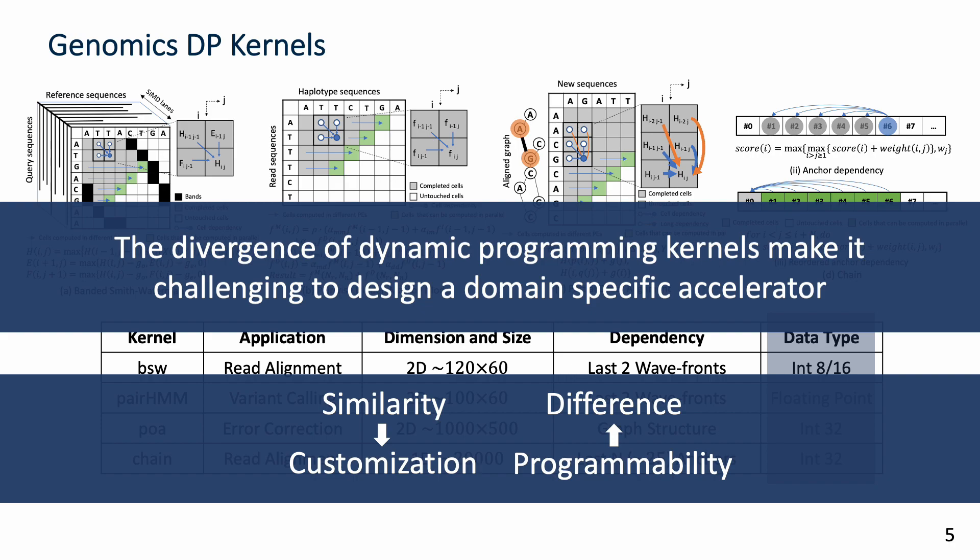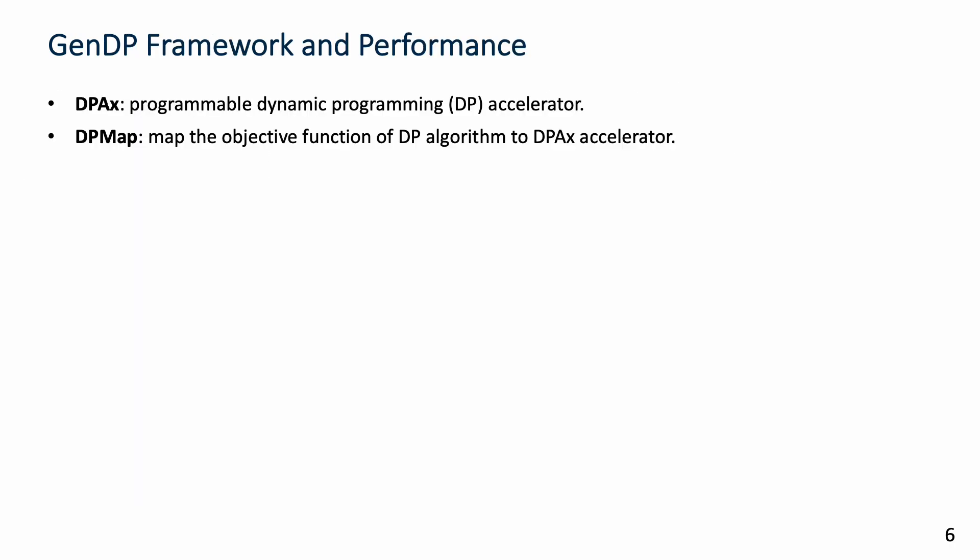The divergence of DP kernels makes it challenging to design a domain-specific accelerator. Our solution is to build customized hardware for their similarity and use programmability to support their differences. We propose the GenDP framework, including the DPACS accelerator and DPMAP algorithm.